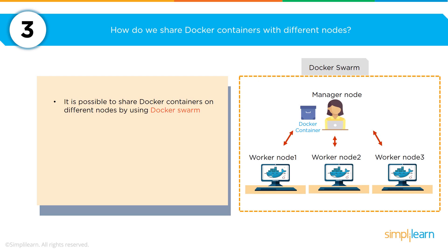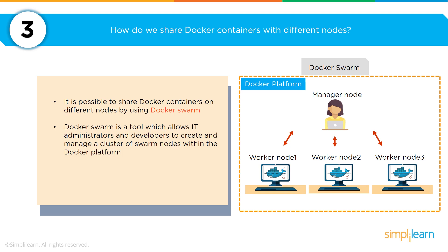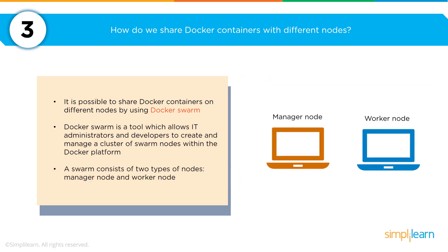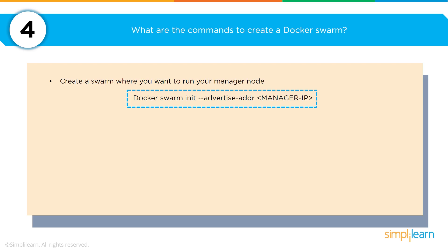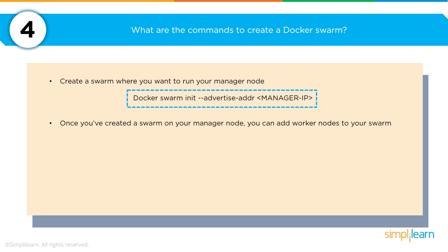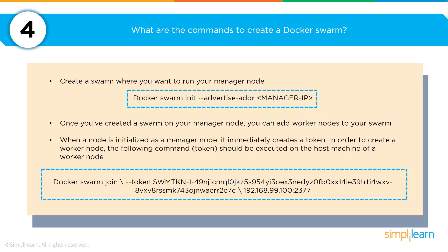To share Docker containers with different nodes, you want to leverage Docker Swarm. Docker Swarm is a tool which allows IT administrators and developers to create and manage clusters of swarm nodes within the Docker platform. There are two elements to the node: the manager node and the worker node. The manager node manages the entire infrastructure and the worker node is the work agent as it gets executed. When creating a Docker swarm, start with the manager node, then create worker nodes. When a node is initialized as a manager node, it creates a token used for worker nodes and associating IP addresses with them.